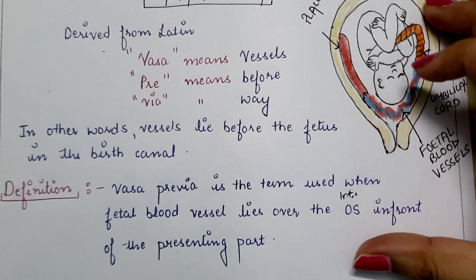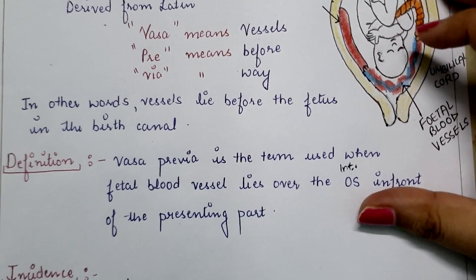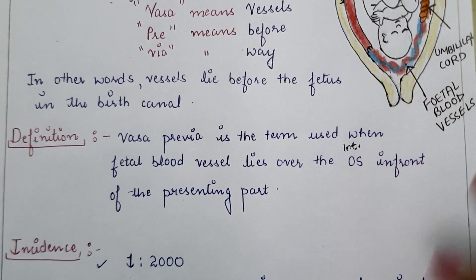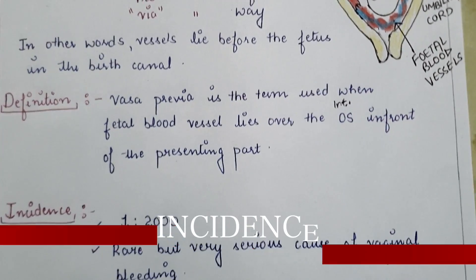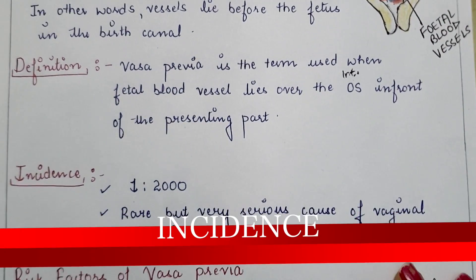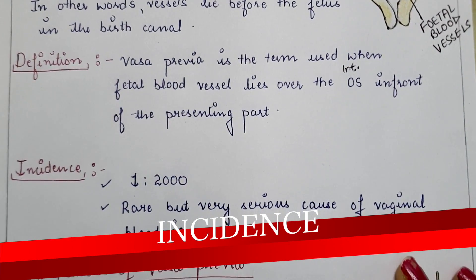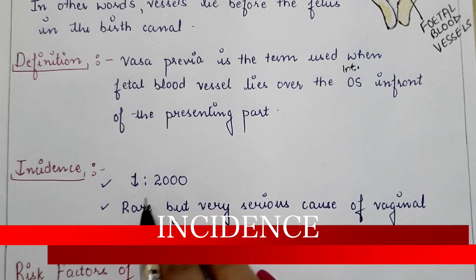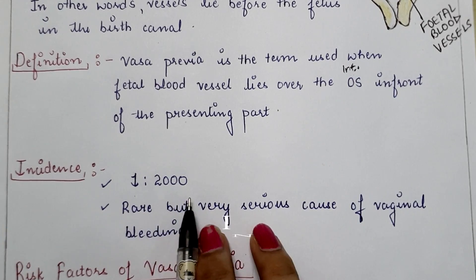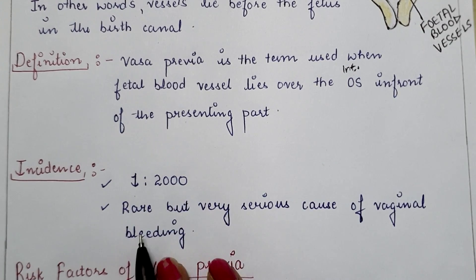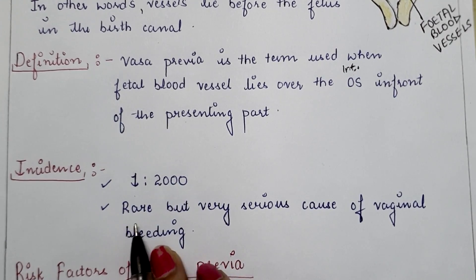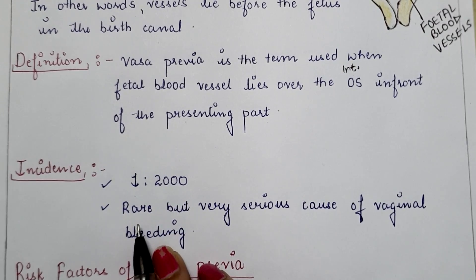Next is the incidence. The chances of vasa previa are actually very rare — that is one among every two thousand births. Vasa previa occurs rarely, but it is a very serious condition.